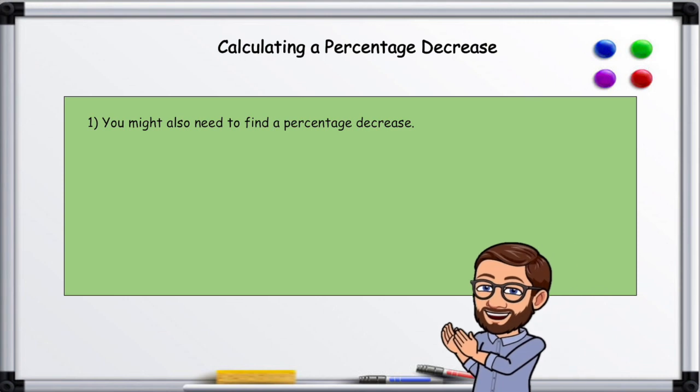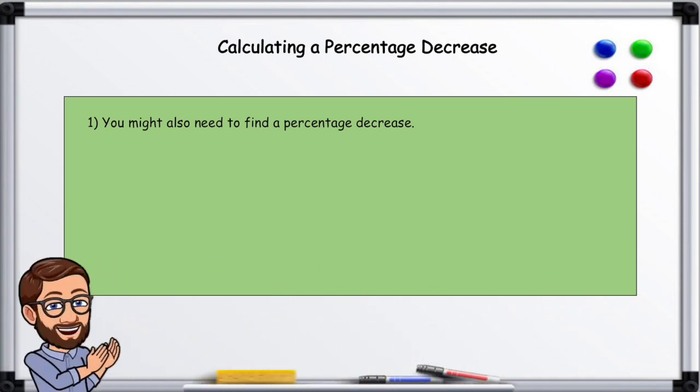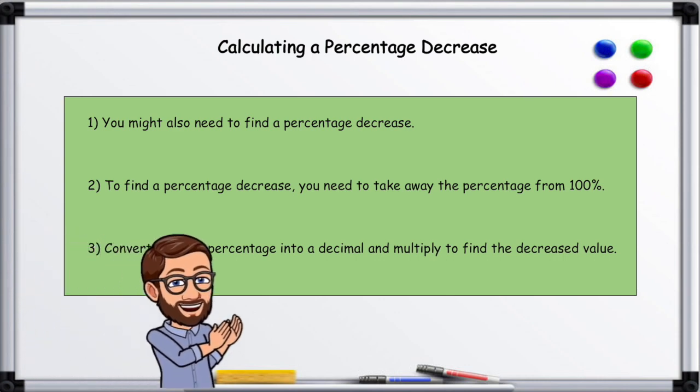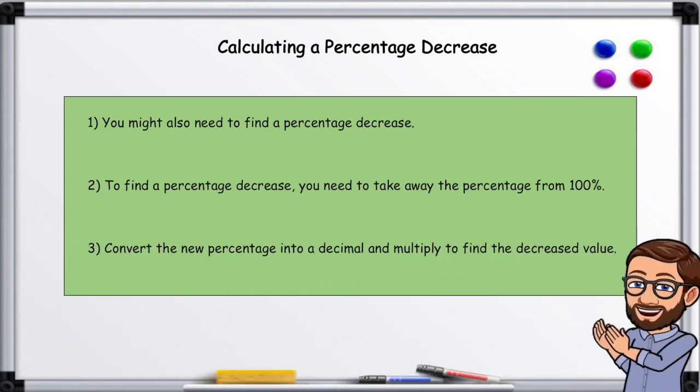You might also need to find a percentage decrease. To find a percentage decrease, you need to take away the percentage from 100, then convert the new percentage into a decimal and multiply the given total to find the decreased value.